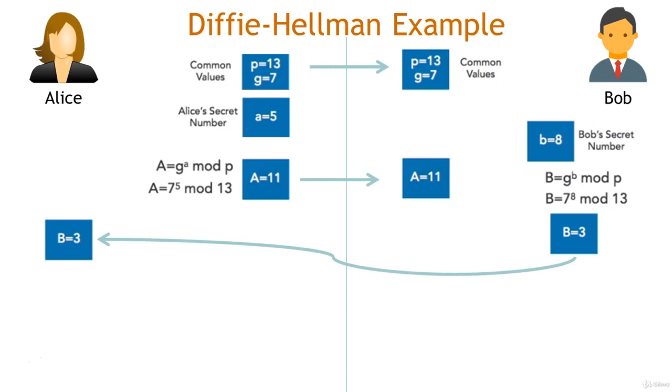Alice then computes the shared secret S using the formula S equals uppercase B to the lowercase a power modulo p. This works out to 3 to the 5th power modulo 13, which is 9. Bob can then compute the same shared secret key using a different formula. S equals uppercase A to the lowercase b modulo p. That works to 11 to the 8th power modulo 13, which is 9.